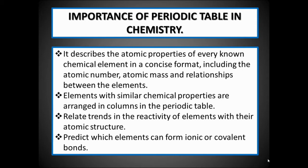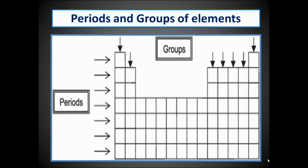The importance of the periodic table in chemistry: it describes the atomic properties of every known chemical element in a concise format, including the atomic number, atomic mass, and relationship between the elements. Elements with similar chemical properties are arranged in columns. It relates trends in the activity of elements with their atomic structure, and we can predict which elements can form ionic or covalent bonds.